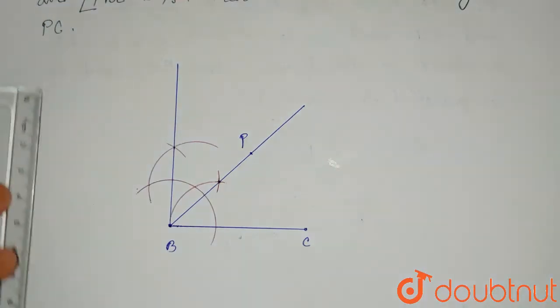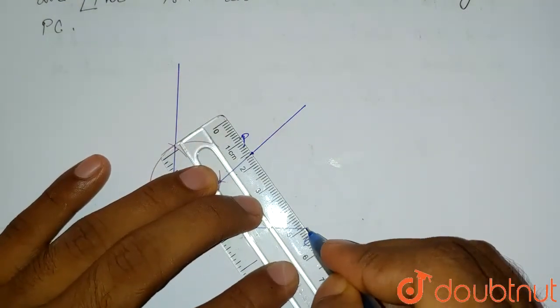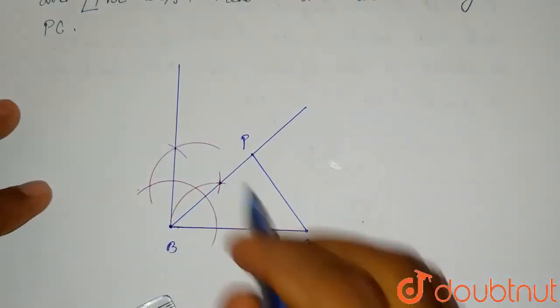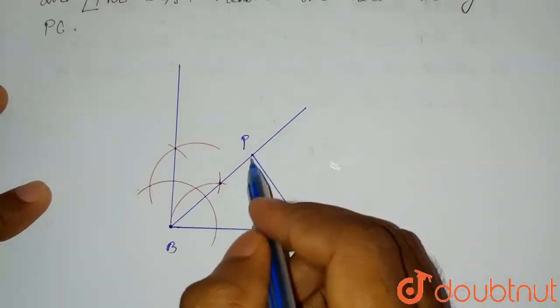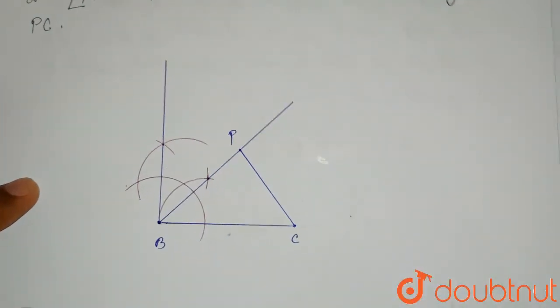Now we have to join P and C. We will join P and C. So this is a triangle where angle PBC is 45 degrees. Let's not write in the diagram.